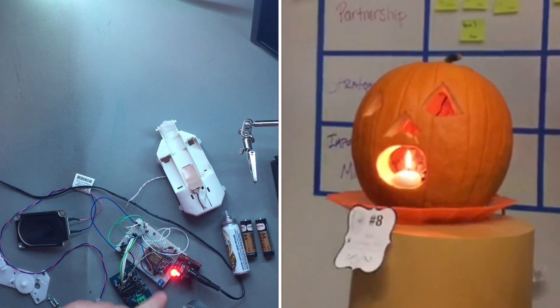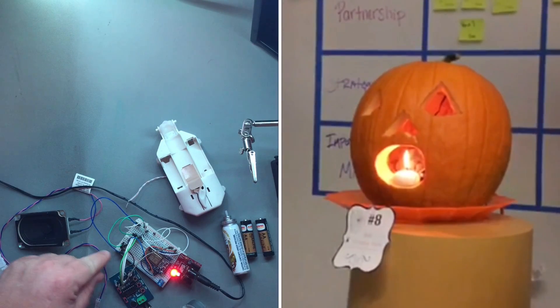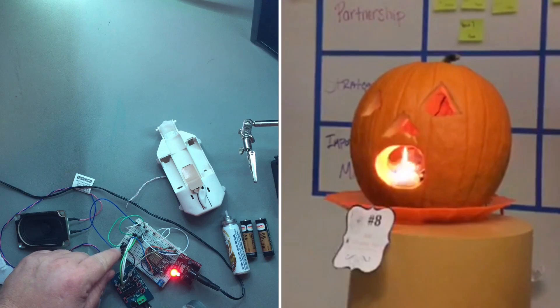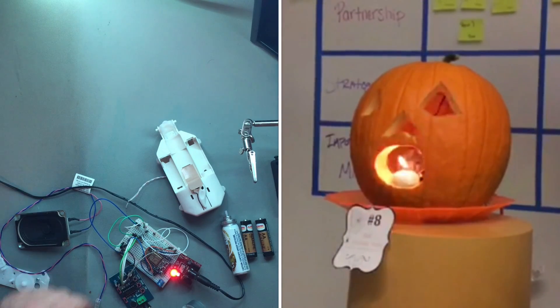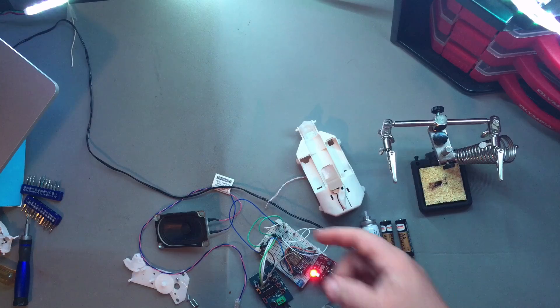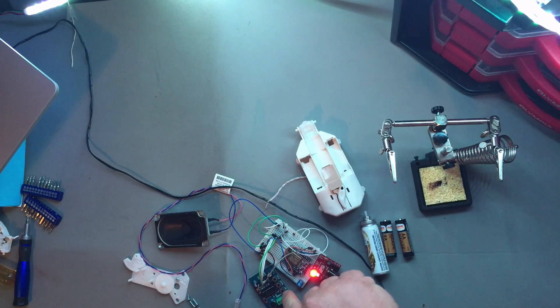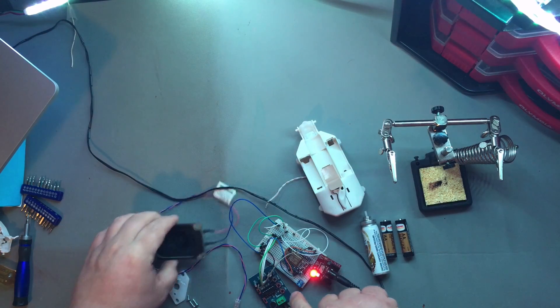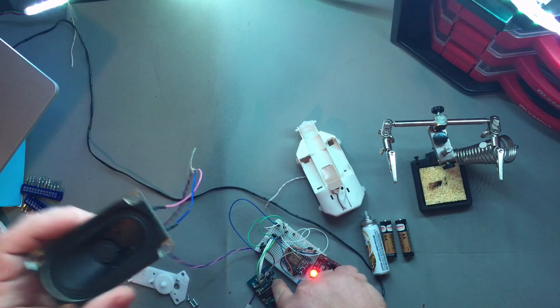Once it gets a signal to say yes, fire off the pumpkin, then it turns on this transistor circuit here. This is just your normal NPN transistor that all it does is send a signal to the playback and record module to play the entire thing.